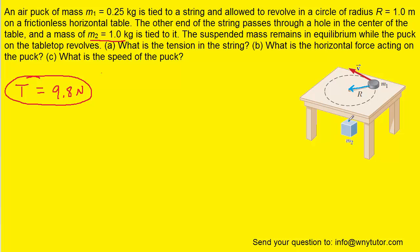If we remember that this tension was 9.8 Newtons, that 9.8 Newtons will come up through the little hole in the table and remain in this rope. So the horizontal force acting on the puck is the same force as the tension—it's the centripetal force as well. For part B, the answer is 9.8 Newtons.